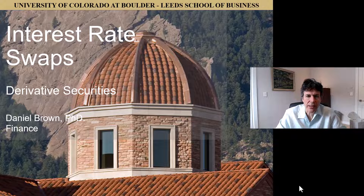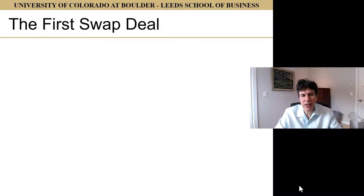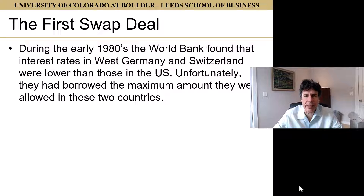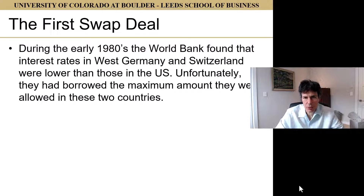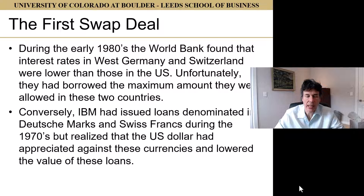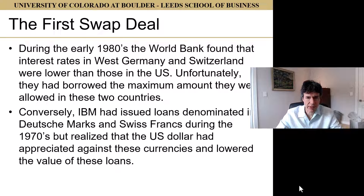To start, it's probably easiest to think about the first swap deal — this gives us a sense of what's going on. During the early 1980s, the World Bank found that interest rates in West Germany and Switzerland were lower than those in the United States, and unfortunately they had borrowed the most they were allowed to in those two countries. There were covenants governing where they could borrow. Conversely, IBM had issued loans denominated in Deutschmarks and Swiss francs during the 1970s but realized the US dollar had appreciated versus these currencies, lowering the value of those loans.